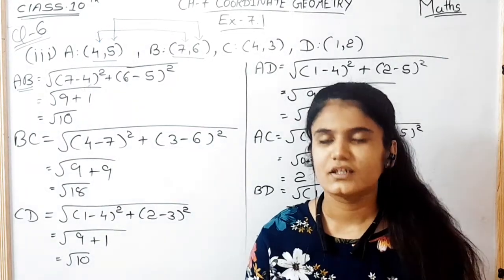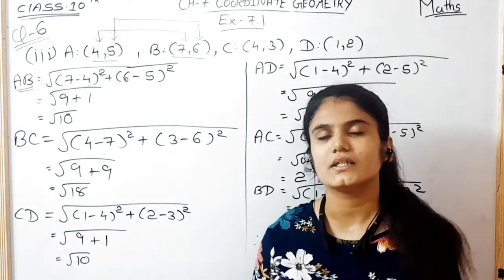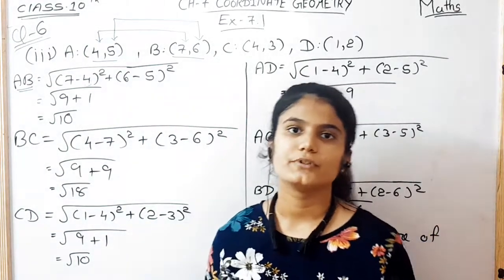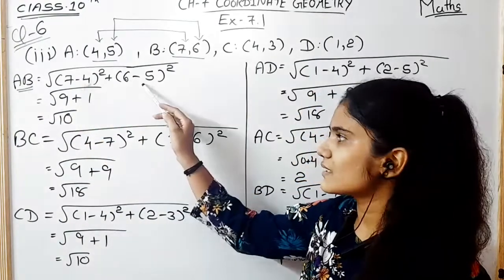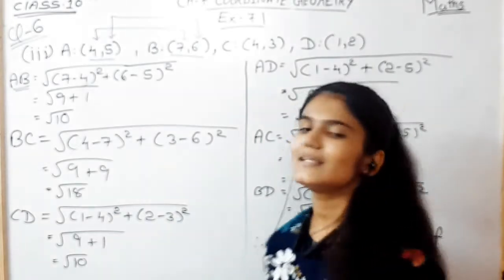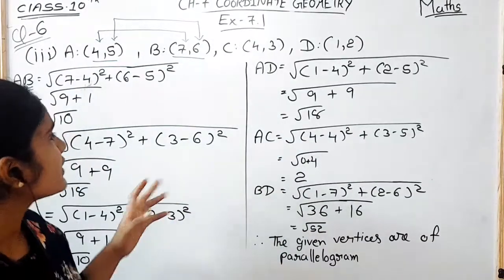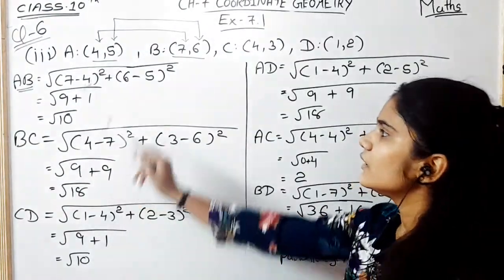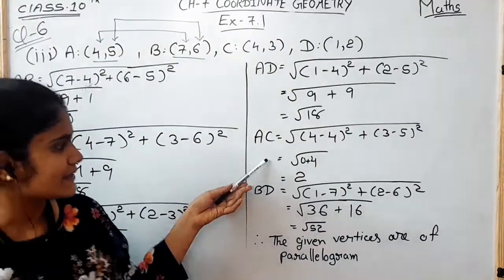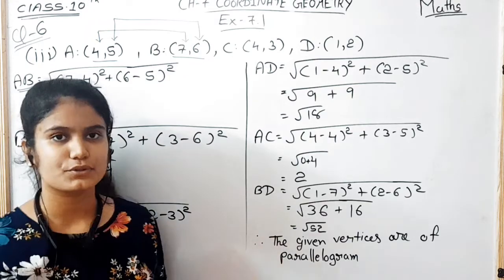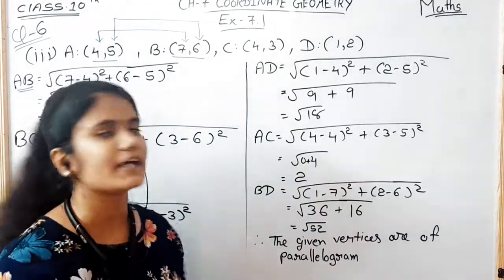For sub-part 3 of question 6, we again have four points A, B, C, D. Using the distance formula √[(x2−x1)² + (y2−y1)²]: AB = √10, BC = √18, CD = √10, and AD = √18. Alternatively, two pairs of opposite sides are equal: AB = CD and BC = AD. Finding the diagonals: AC = 2 and BD = √52. Since the diagonals are not equal, the given vertices form a parallelogram.